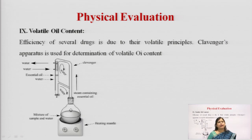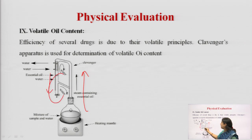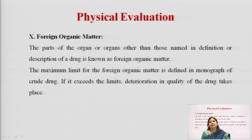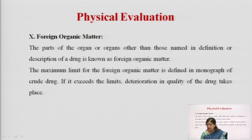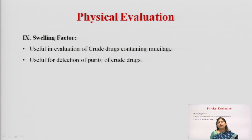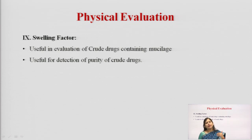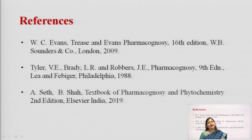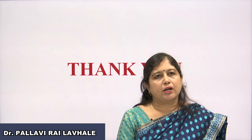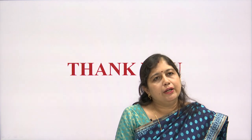We can determine the volatile oil content using the Clevenger apparatus by simple distillation — the drug is evaporated and then cooled down, giving a known amount of essential oil. We can also determine the foreign organic matter: we spread out a sample and find what weight of substances are not from that particular drug — that weight becomes the foreign organic matter. We can determine the swelling factor for mucilaginous drugs by placing a drug in a measuring cylinder with water for a particular time and determining how much swelling has taken place. With this we finish our physical as well as microscopic evaluation of crude drugs.